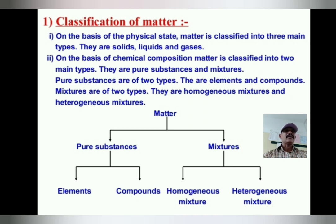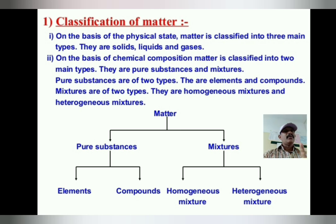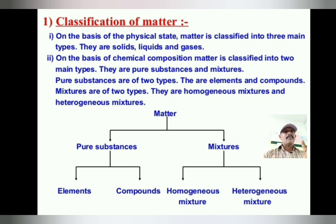Matter is anything which occupies space and has mass. Pure substances are made up of the same kind of atoms or elements. Mixtures are made up of two or more pure substances. An element is a substance that cannot be decomposed into simpler substances. A compound is formed when two or more elements combine in a definite proportion chemically. A homogeneous mixture is called a solution, and a heterogeneous mixture is called a suspension.